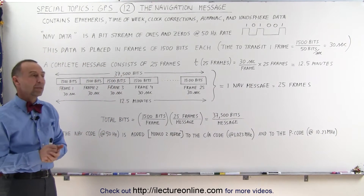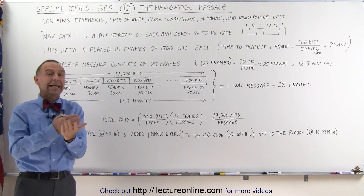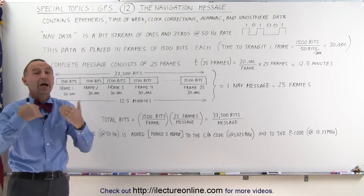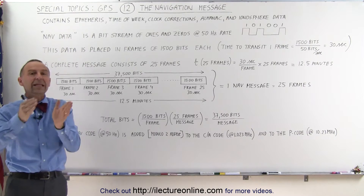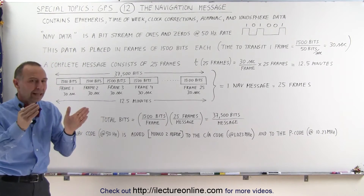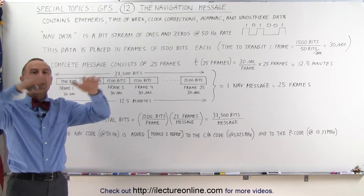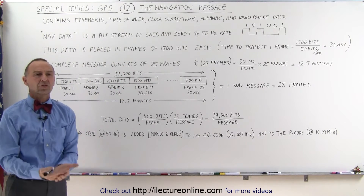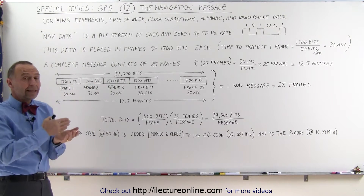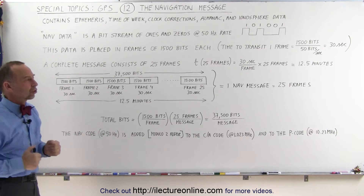That seems like a lot of time. Well, the navigation message consists of both data that the receiver needs on a regular basis and needs to be updated — those are sent in each frame. That means it only takes 30 seconds to get updates to that data. The rest of the frame is filled with data of the entire GPS constellation, added up over 25 frames to get the entire message across.